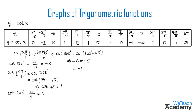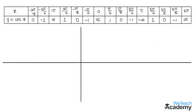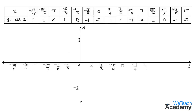Now let us plot these points on a coordinate plane with a suitable scale. The vertical line is the y-axis and the horizontal line is the x-axis. We plot the values y = 1 and y = −1 on the y-axis, and the radian values on the x-axis. Note that cot(x) is undefined at −π, 0, π, and 2π, so vertical asymptote lines are drawn at those x-values.